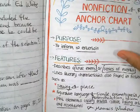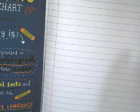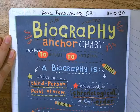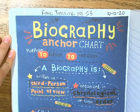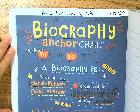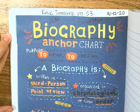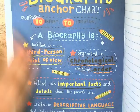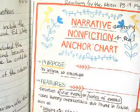In our reading part of our journal, we went ahead and cut and pasted the biography anchor chart, page 53 on MyView 4.1. This is for our story 'Rare Treasure' this week. I just cut it out and it should be behind the last anchor chart that we did last week. That's what we did in our reading journal.